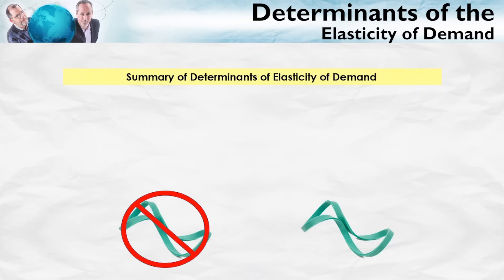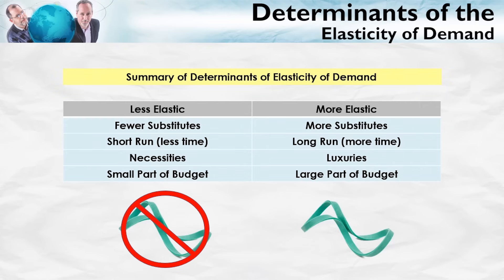Let's summarize the determinants of the elasticity of demand. For less elastic demand: fewer substitutes, short run, necessities, small part of the budget. For more elastic demand: more substitutes, long run, luxuries, large part of the budget. You can memorize these, but once you understand that elasticity means how responsive quantity demanded is to a change in price, you'll be able to figure out these factors yourself.